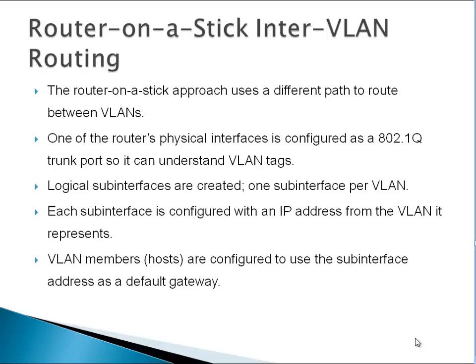VLAN member hosts are configured to use a sub-interface address as a default gateway. With legacy routing, the router had to have as many interfaces as VLANs - say you have 10 VLANs, you need 10 interfaces. Now we need only one physical interface and we create virtual sub-interfaces, one per VLAN. One disadvantage: with one interface per VLAN each had its own bandwidth, but now bandwidth is shared on that single interface.